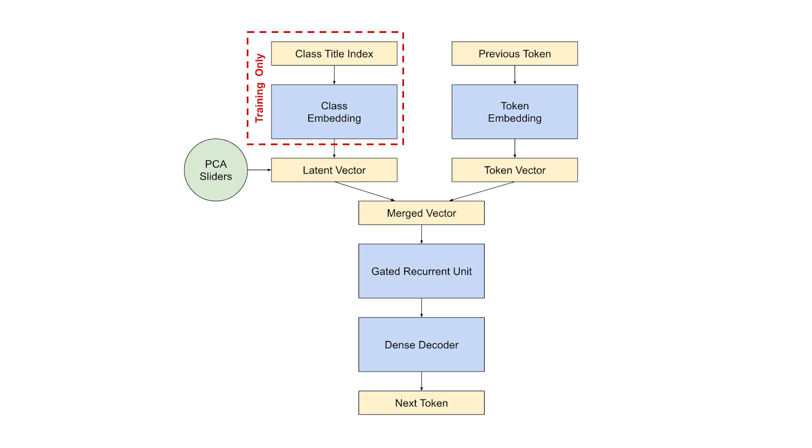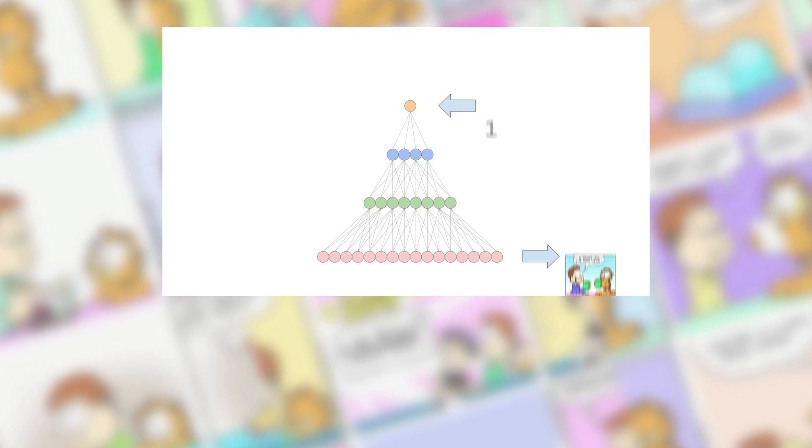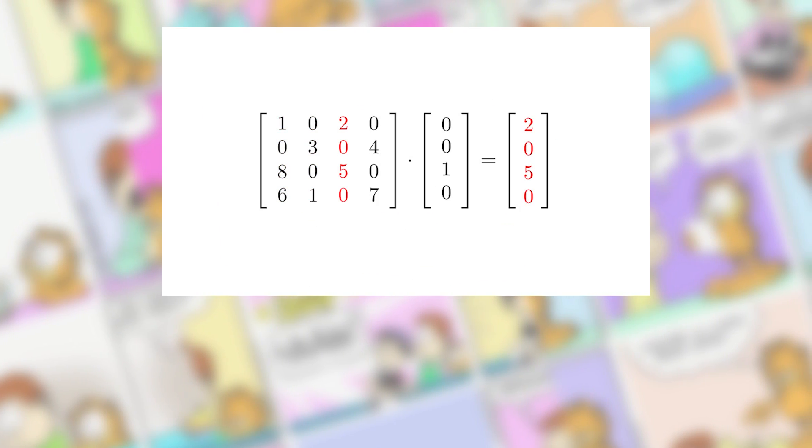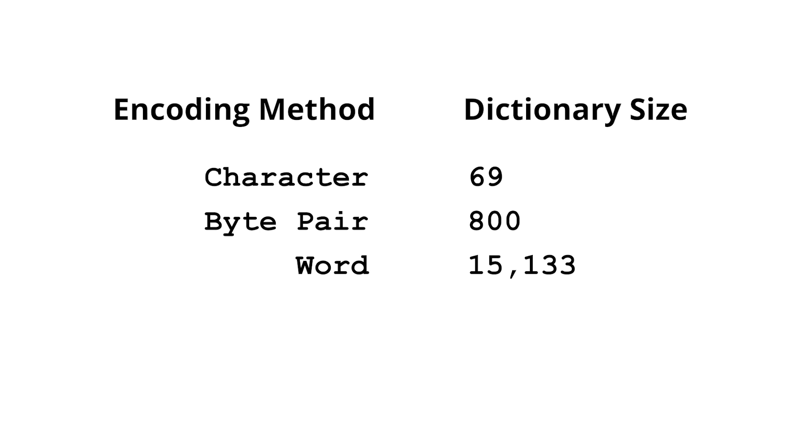It's similar to the YouTube comment generator, but I'm using an embedding encoder for the context instead of a video title. If you want a good explanation about what an embedding encoder is, it's explained really well in my Garfield video. I decided to use a dictionary of 800 tokens for no particular reason, but it felt like a good balance.